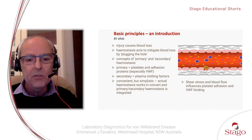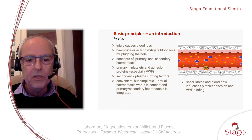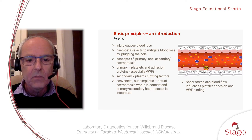I shall start the talk with a basic overview or introduction in regards to the basic principles of haemostasis. Very simply, injury will cause blood loss unless you can mitigate that blood loss. Haemostasis is a process by which the body acts to mitigate the blood loss, essentially by plugging the hole caused by the injury. Within the concepts of haemostasis, we talk about primary and secondary haemostasis.